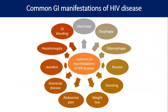The common GI manifestations that a patient presents with are vomiting, weight loss, abdominal pain, anorectal diseases, jaundice, hepatomegaly, GI bleeding, diarrhea, dysphagia, or odynophagia, etc. Based on this combination of symptoms and signs, along with a little bit of investigation, we can also treat them.